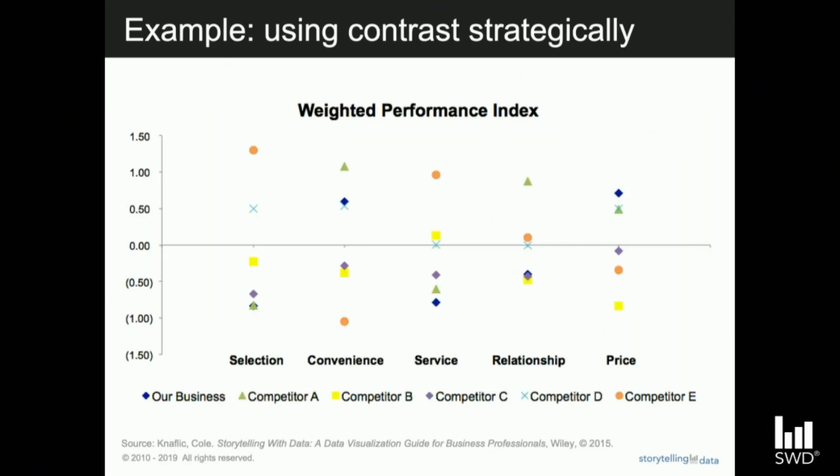Notice how, even after I just explained every bit of this graph, it's still awful to look at. Even if our audience is very patient, we've made things pretty hard. In some cases, our business — the blue diamond — is partially obscured by other data markers, making the comparison that's probably the most important to make difficult to do. Here, we're not using our contrast strategically.